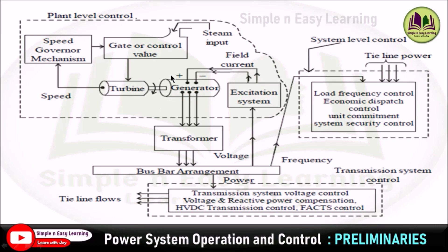This is all about the plant level control. These two concepts — speed governor and excitation control — we already discussed in the PF and QV loops, and they come under the plant level control. We also have one more loop here: the secondary ALFC control, which comes under system level control.